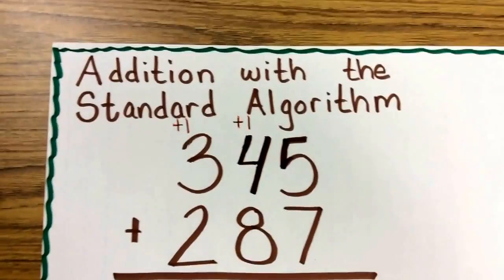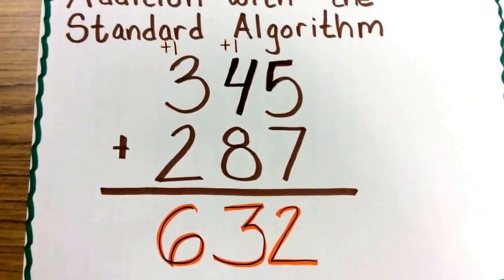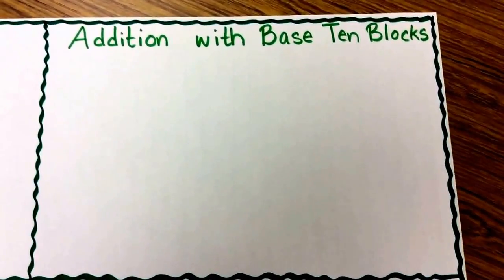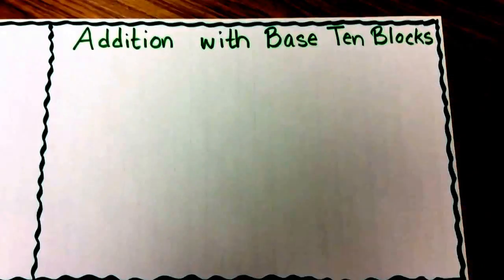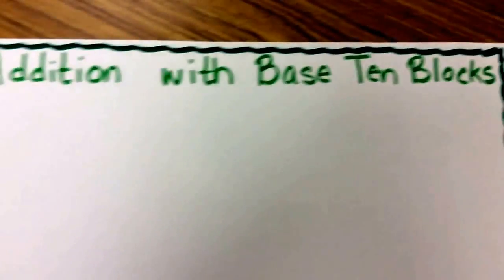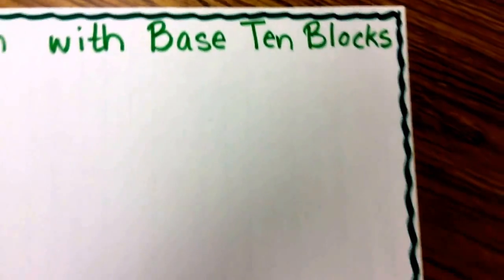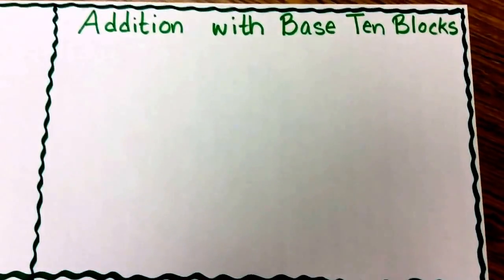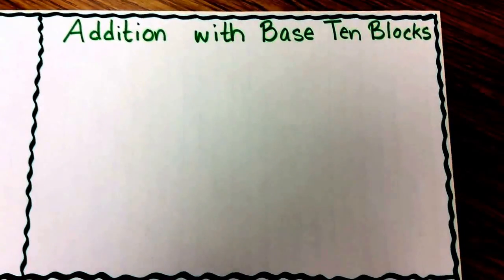One plus three plus two is six, or six hundreds, and we end up with a sum of 632. That's called the standard algorithm. Adding with the standard algorithm is a great way of adding, but there are so many other ways to show our adding abilities. So let's try addition with base ten blocks. Now that you're in third grade, let's draw what those base ten blocks would look like rather than using the actual pieces.